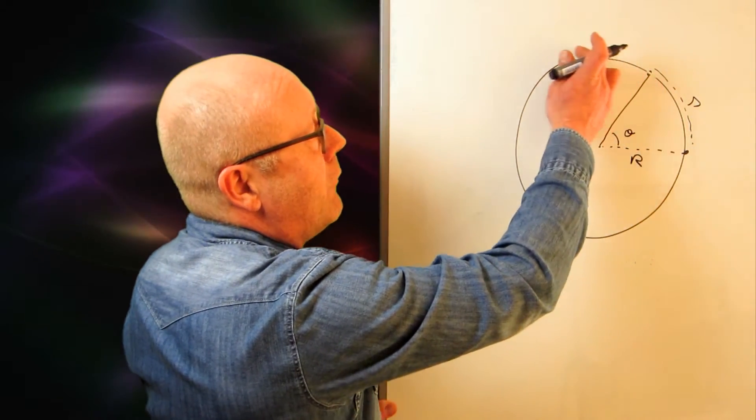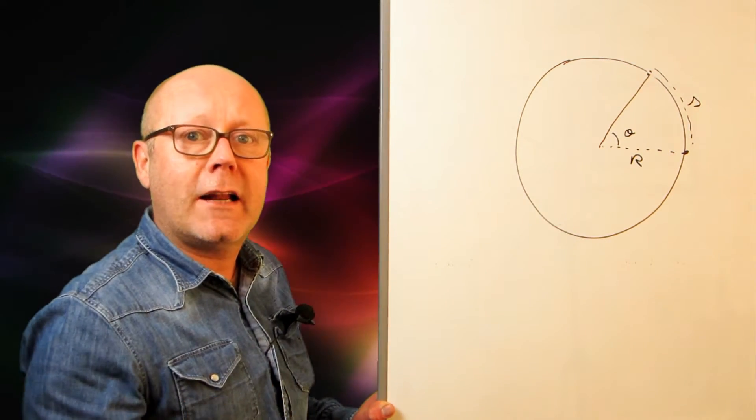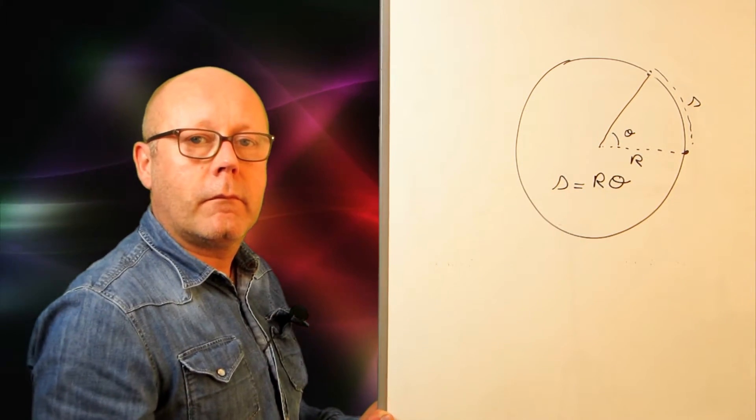By covering this distance S, we swept an angle theta. There is a relationship between these quantities. If I increase my distance covered, my angle theta will also increase as a proportionality relationship. The relation between all these quantities is that the arc is equal to the radius multiplied by the angle theta. A very simple relationship, but one that defines the angle theta. Because I can write theta equals S on R, the ratio of the arc on the radius. And what I notice is that if the arc is equal to the radius, then theta will be equal to one, one radian. This is what defines the radian.